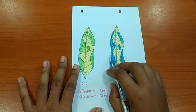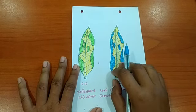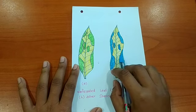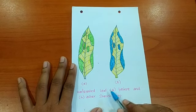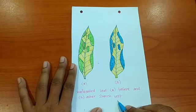So, this activity is to conclude whether sunlight is essential for photosynthesis or not. So, this is all about the activity of variegated leaf before and after starch test.